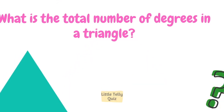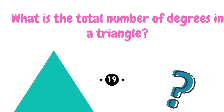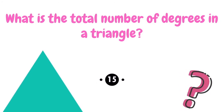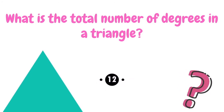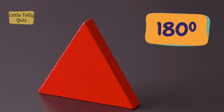What is the total number of degrees in a triangle? The answer is 180 degrees.